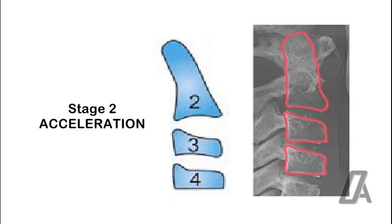Stage 2, Acceleration. In this, acceleration of growth takes place. Concavities are seen in inferior borders of C2 and C3, and the body is rectangular in shape. Inferior border of C4 remains flat. 65-85% of pubertal growth remains.